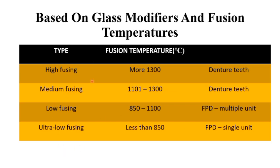Based on the glass modifiers and fusion temperature, ceramics or porcelains are classified into high fusing, medium fusing, low fusing, and ultra-low fusing. The material of choice also matters clinically: ultra-low fusing is used only for single-unit prostheses, as it lacks the strength to withstand forces in multiple-unit cases. Low fusing, with a fusion temperature range of 850–1100°C, is utilized for multiple-unit FPDs, whereas ultra-low fusing is suitable for single-unit FPDs.